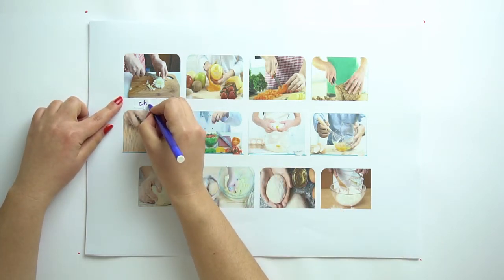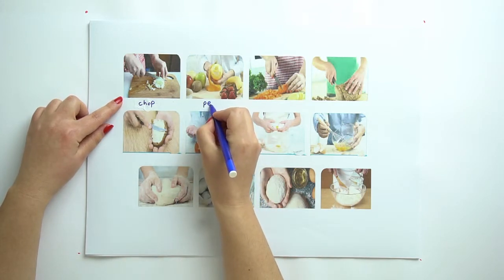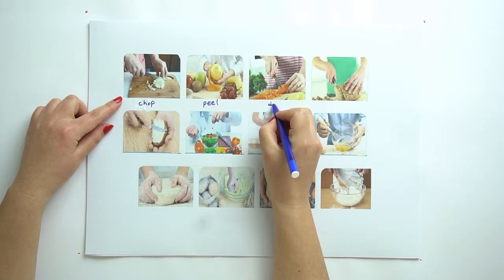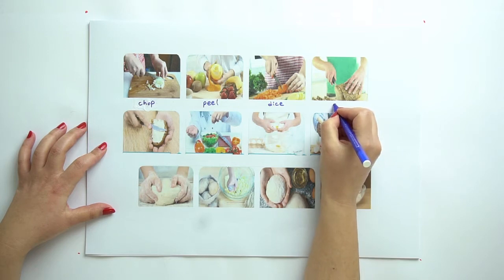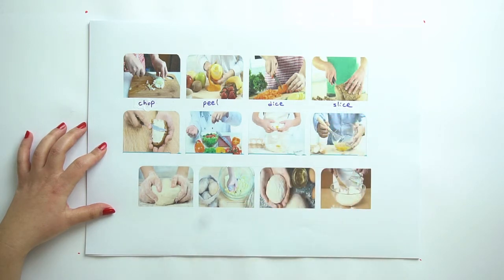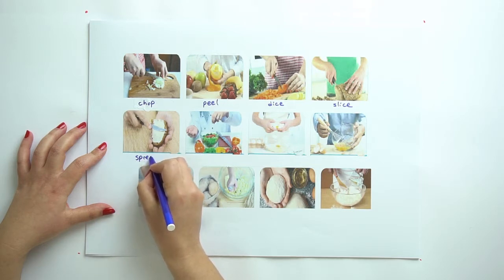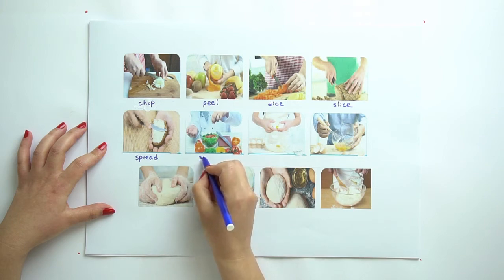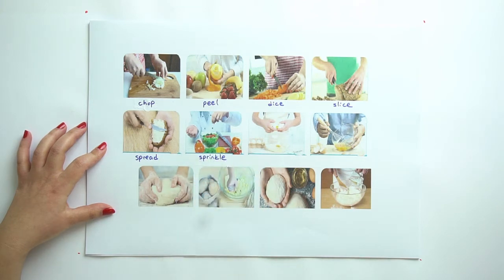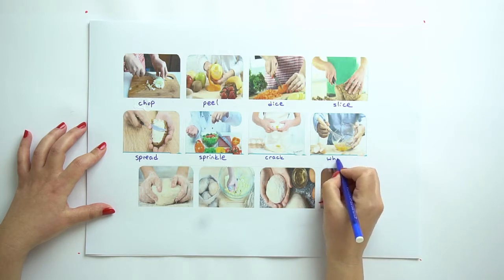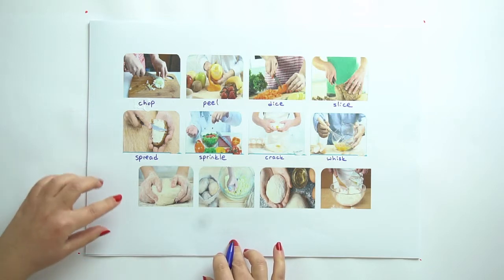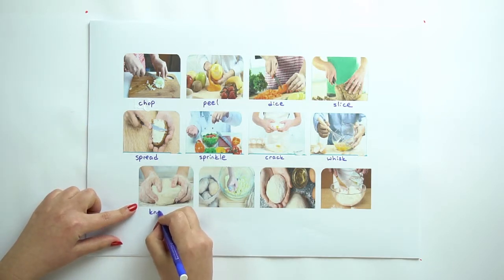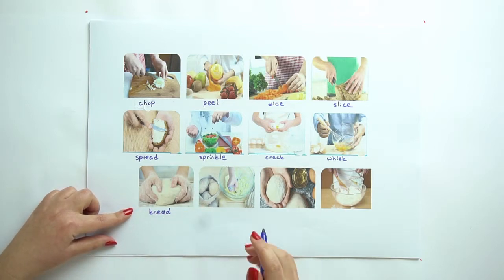First let's have a look at the verbs here. The first one is chop, and this is grate. That one is slice. This one is spread, and this is sprinkle. Here we say crack the eggs. This is whisk.